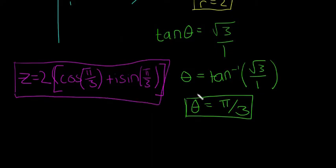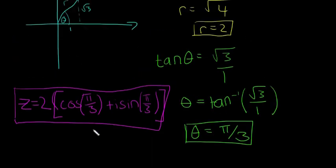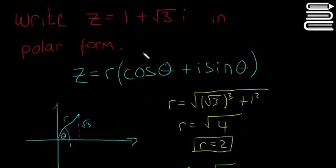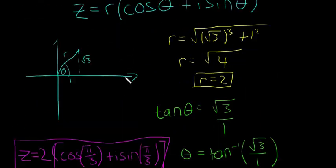And there is our complex number in the polar form. That's all there is to it. This is the exact same thing as 1 plus the square root of 3i, it's just written in a different way.